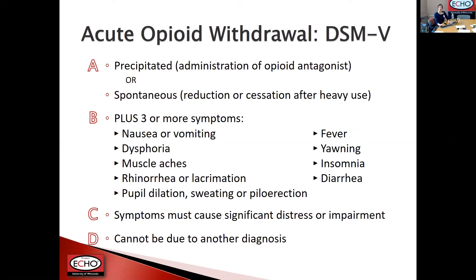Switching gears, the diagnosis of opioid withdrawal involves four main sections. Withdrawal can be either precipitated — after administration of an opioid antagonist like naloxone — or spontaneous, after someone who uses large amounts of opioids cuts back or stops altogether. You need at least three or more symptoms from the list: GI symptoms, mood changes, muscle aches, runny nose, tearing of the eyes, pupil dilation, sweating, goosebumps, fever, yawning, insomnia, and diarrhea. These symptoms must cause significant distress or impairment and cannot be due to another diagnosis.